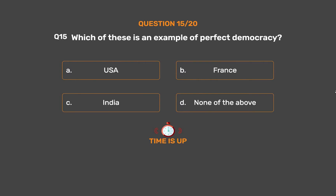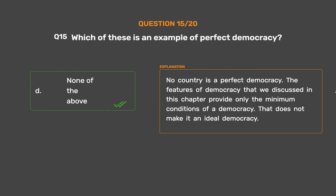The correct answer is Option D: None of the above. No country is a perfect democracy. The features of democracy discussed in this chapter provide only the minimum conditions of a democracy. That does not make it an ideal democracy.